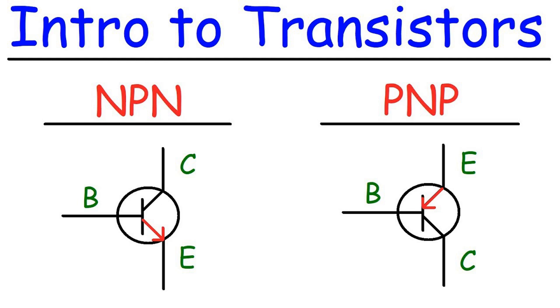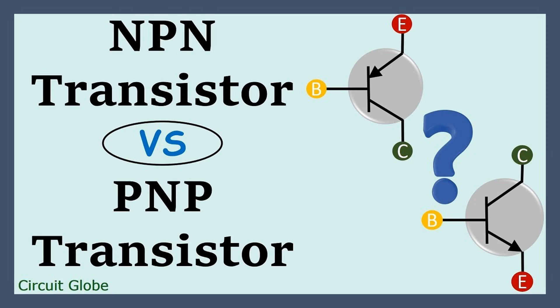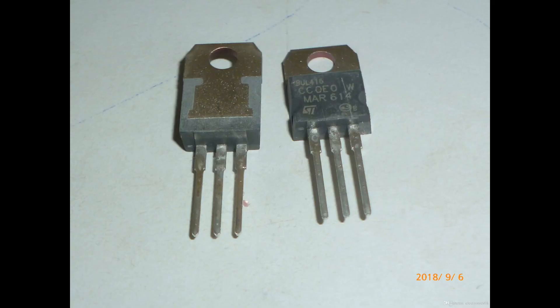The base terminal, often denoted as B, is one of the three terminals of a bipolar junction transistor (BJT). BJTs are semiconductor devices used in electronic circuits for amplification and switching purposes. The base terminal plays a critical role in the operation of a BJT. It serves as the control or input terminal of the transistor and controls the flow of current between the emitter and the collector terminals. In an NPN transistor, the base current (IB) is the current flowing into the base terminal, while in a PNP transistor it flows out. The base current is used to control the operation of the transistor.